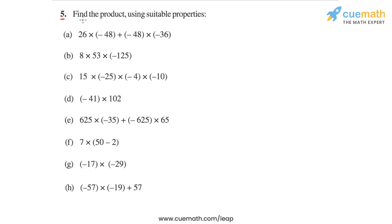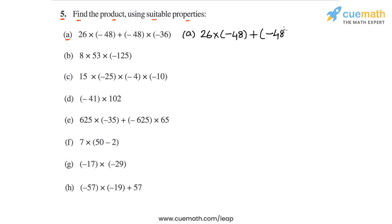In question 5, we have to find the value of each of the given expressions using suitable properties of integers. Let's start with part A. In part A we have the expression 26 into minus 48 plus minus 48 into minus 36. We have to calculate the value of this expression.